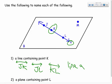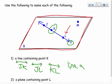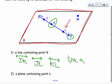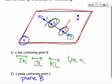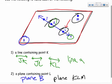It also asks to name a plane containing point L. Point L is on this flat plane. One way is to use the letter in the corner of the plane, so I can say plane B. The other way is to use three points that lie in the plane — any three points — so I could say plane KLM, using three non-collinear points.